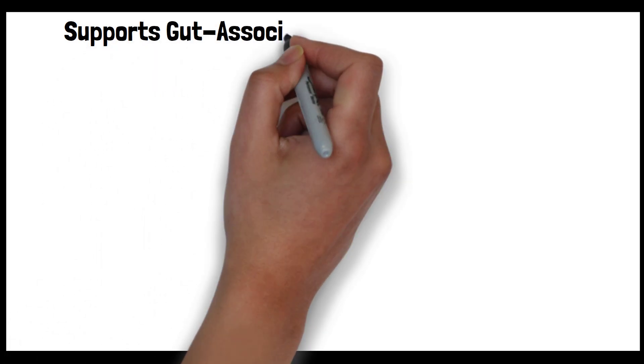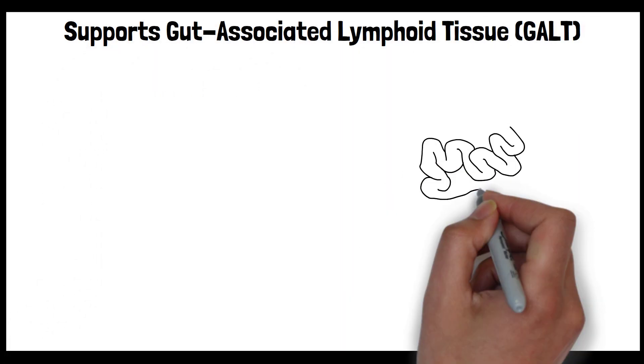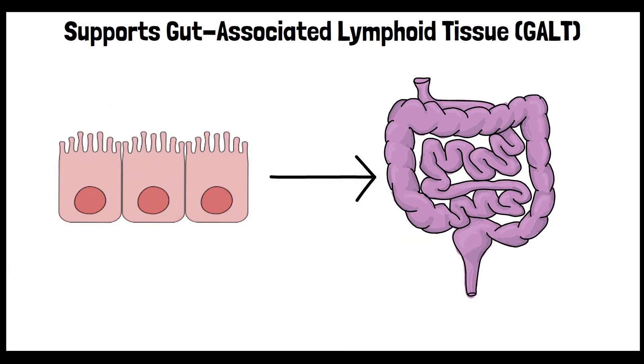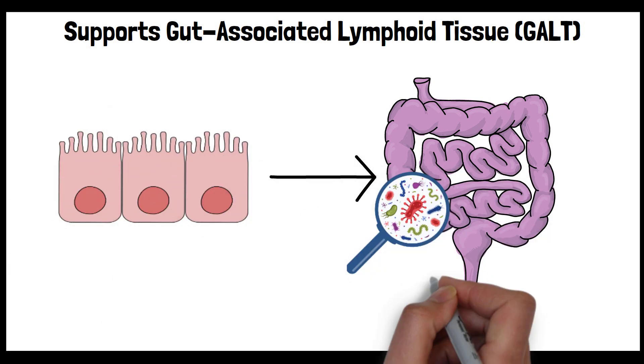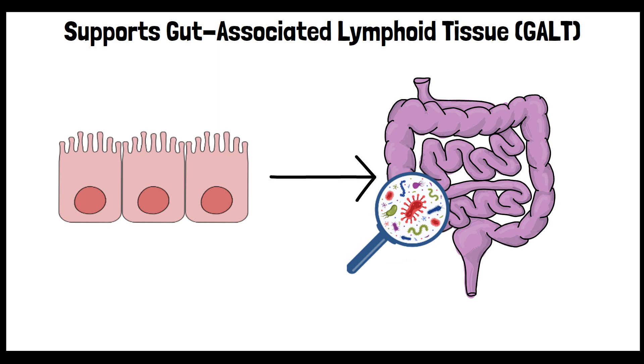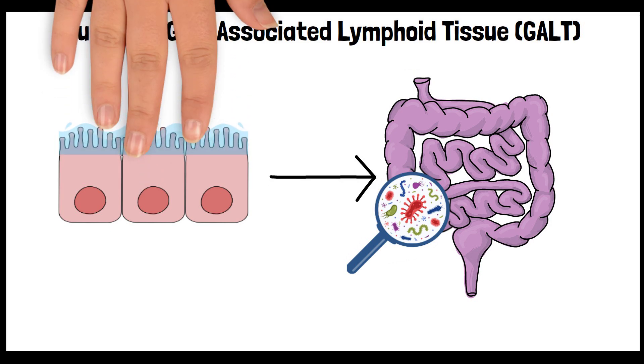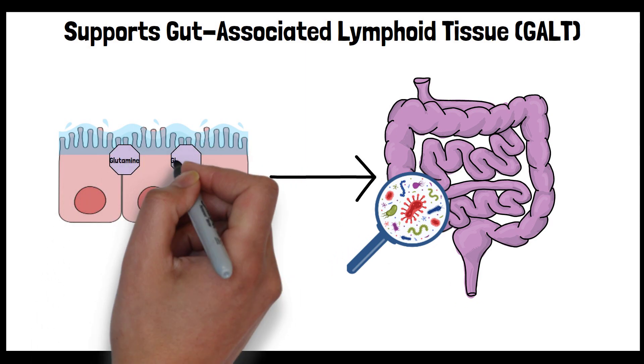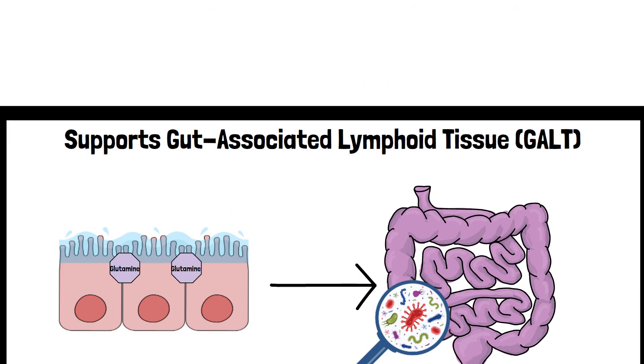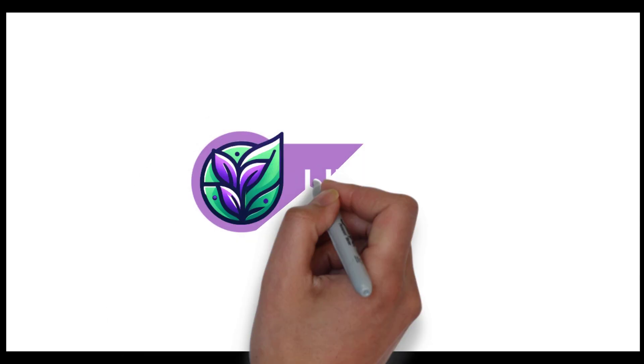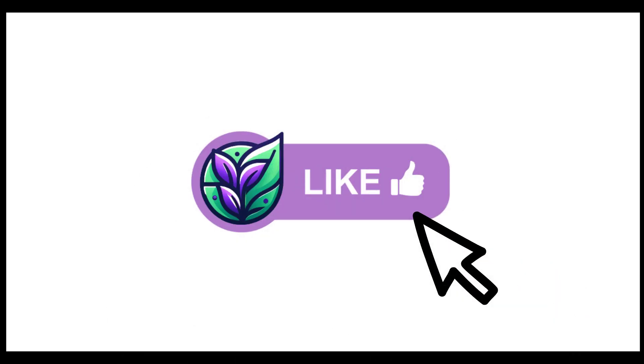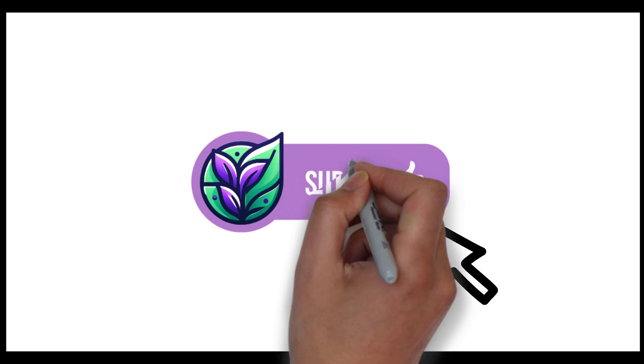Three, supports gut-associated lymphoid tissue. GALT is a critical component of the immune system found in the gut. It's responsible for identifying and fighting pathogens that enter through the digestive system. Glutamine helps maintain the health and function of this tissue, supporting the body's ability to protect itself from gastrointestinal infections. If this video has given you value so far, don't forget to hit that like button. And to keep learning about how to improve your health, make sure to subscribe.